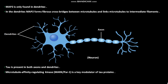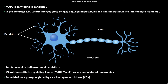Microtubule affinity regulating kinase, MARK or PAR1, is a key modulator of Tau proteins. Some MAPs are phosphorylated by a cyclin dependent kinase, or CDK.